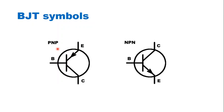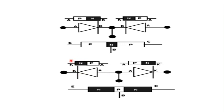Let us see the BJT symbols. There are two transistors: NPN and PNP. To recognize the type, if it is a PNP transistor, the arrowhead in the emitter is directed towards the base region. For an NPN transistor, the arrowhead in the emitter is always pointing outward — away from the base. The diode equivalent of a PNP transistor shows two diodes connected in one fashion, and for an NPN transistor, two pn junction diodes are connected in the opposite fashion.